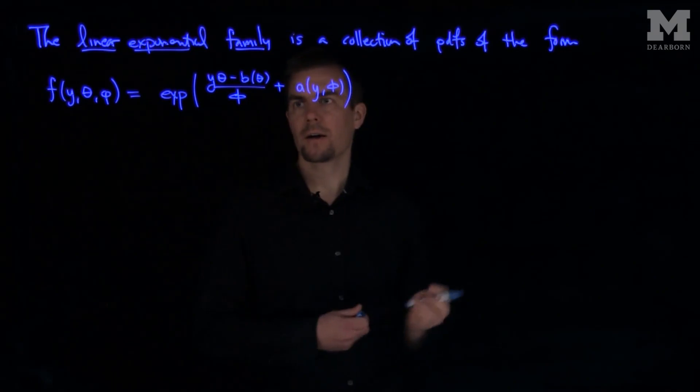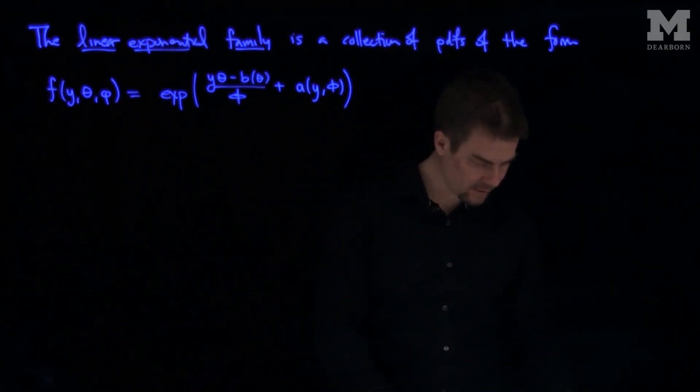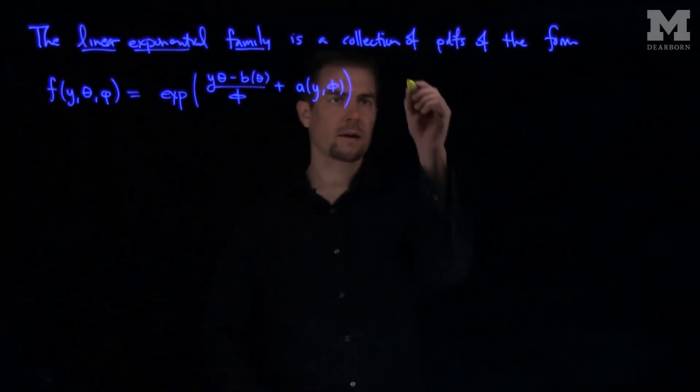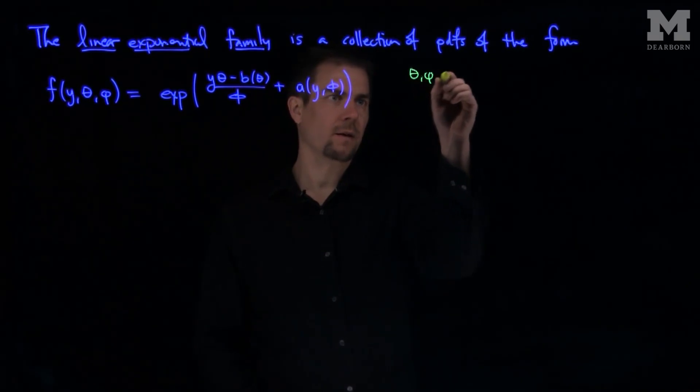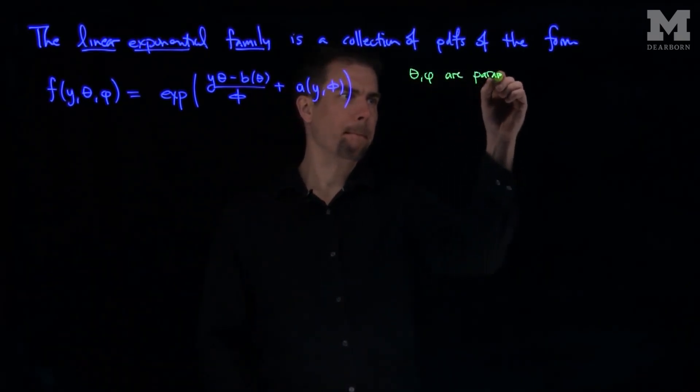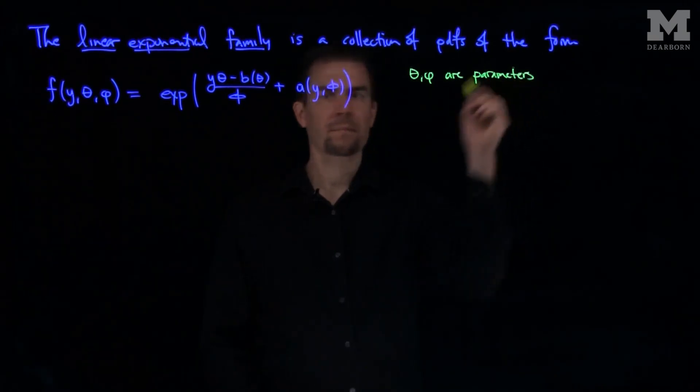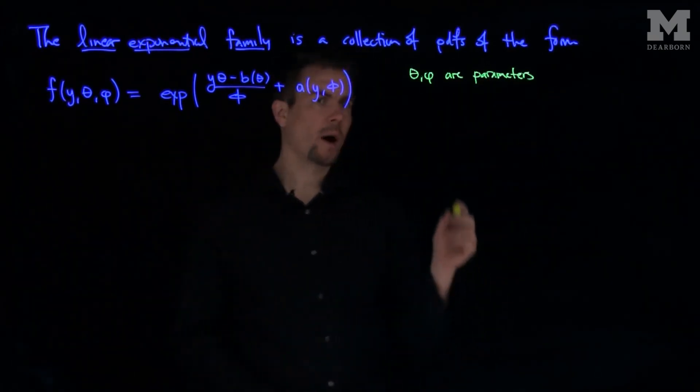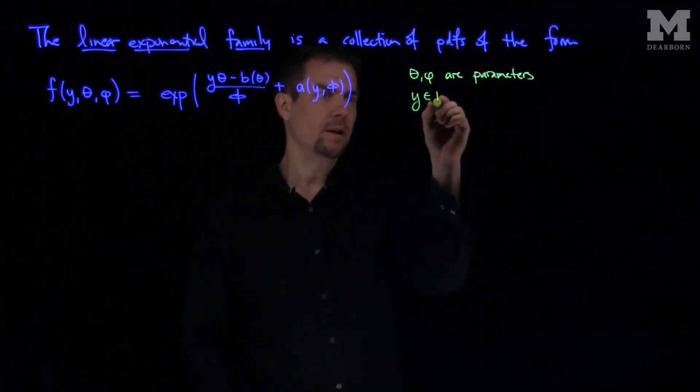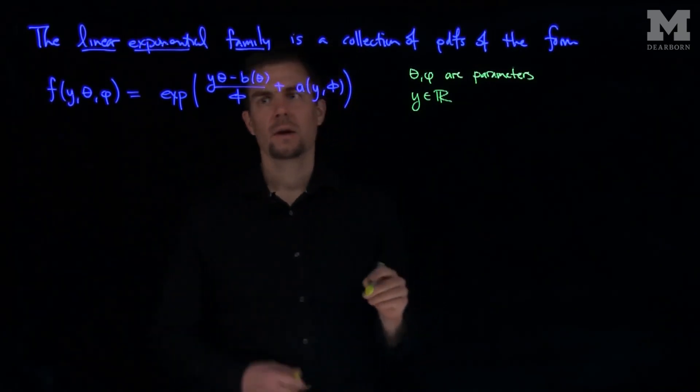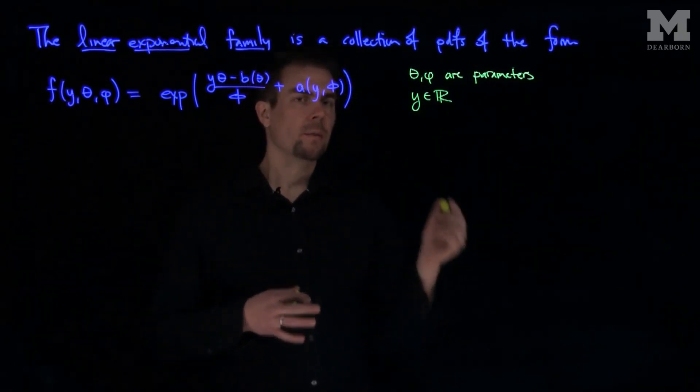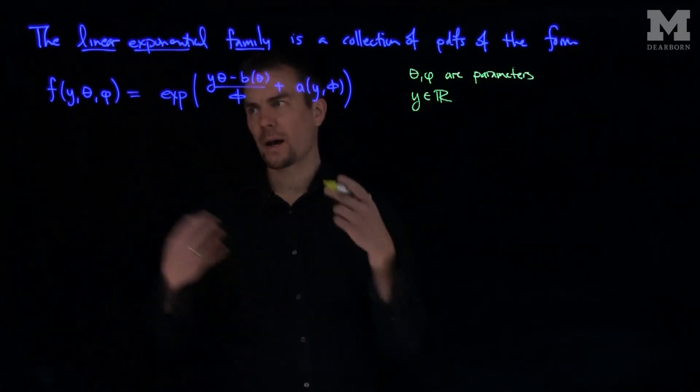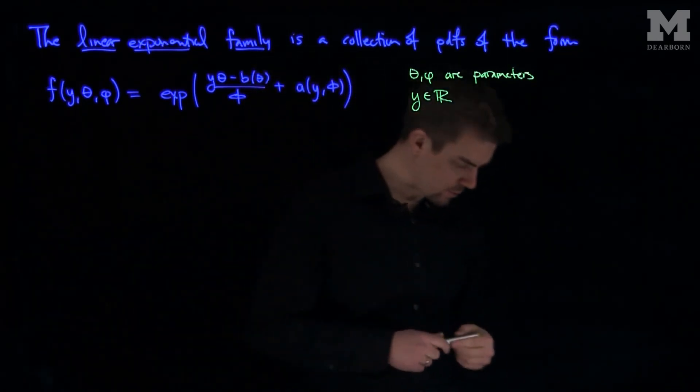Here θ and φ are parameters in the problem, and y is allowed to be any real number. We can put support restrictions on y for individual members of this distribution.